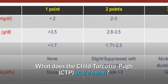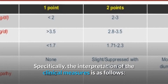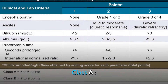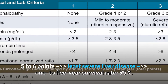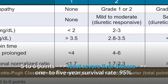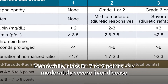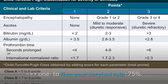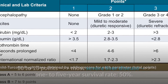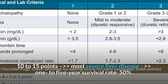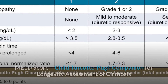What does the CTP score mean? Class A: 5–6 points indicates the least severe liver disease, with a 1–5 year survival rate of 95%. Class B: 7–9 points indicates moderately severe liver disease, with a 1–5 year survival rate of 75%. Class C: 10–15 points indicates the most severe liver disease, with a 1–5 year survival rate of 50%.